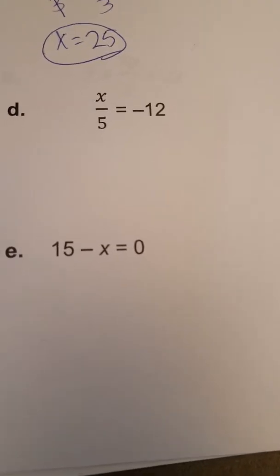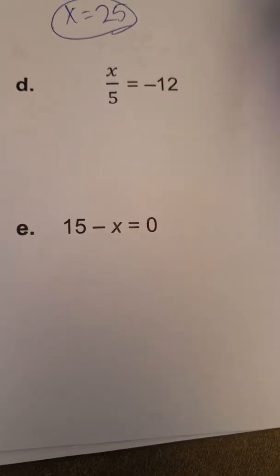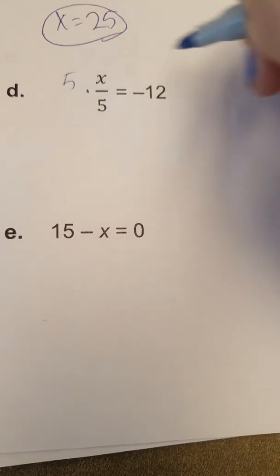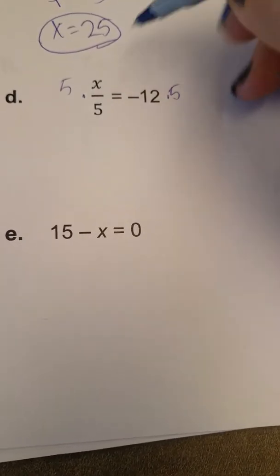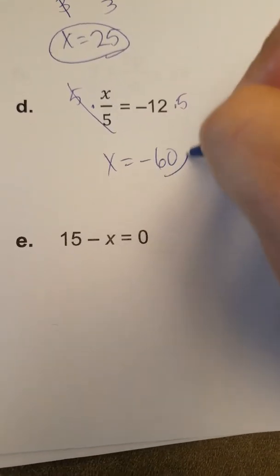Part D, I've got x divided by 5 is equal to negative 12. To undo division by 5, we are going to multiply both sides of the equation by 5 to get that x is equal to negative 60.